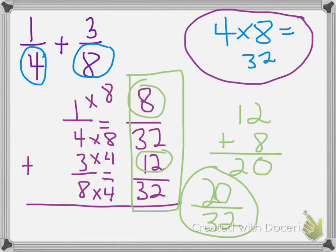And so the sum of one-fourth plus three-eighths is 20 over 32. Now keep in mind that 20 over 32 is not in simplest form, but it is correct. It is the sum of one-fourth plus three-eighths.